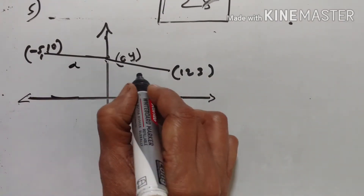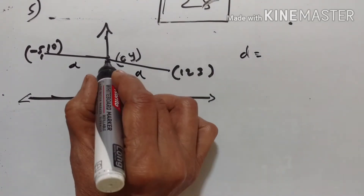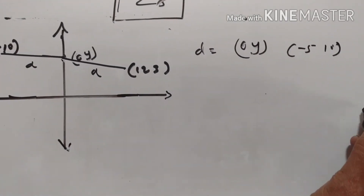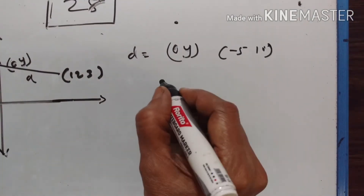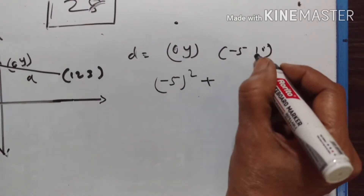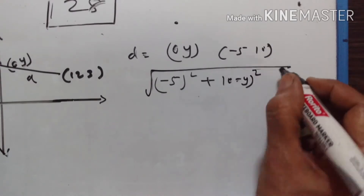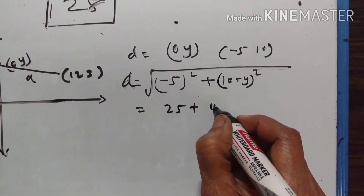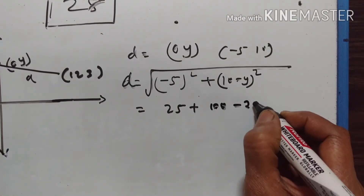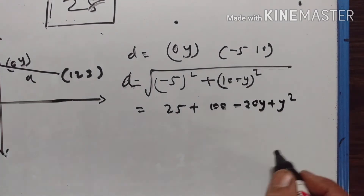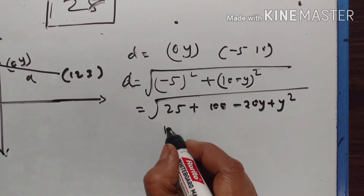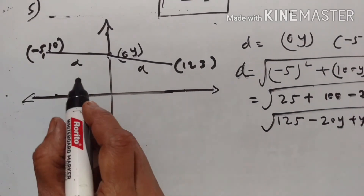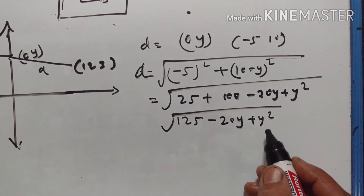This point (0, y) is equidistant from both points, so both distances are equal. The first distance d between (0, y) and (-5, 10): (-5 - 0)² + (10 - y)² = 25 + (10 - y)² = 25 + 100 - 20y + y² = 125 - 20y + y². So this distance = √(125 - 20y + y²).